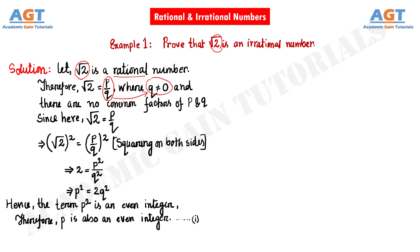Now if any one of these conditions — that Q is not equal to 0, or that there are no common factors of P and Q — if these conditions are not fulfilled, then we can say that root 2 is not a rational number and it will automatically satisfy as an irrational number. So according to our assumption for now, root 2 equals P divided by Q.